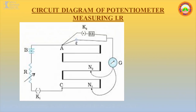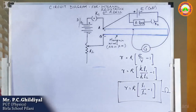In the circuit diagram for measuring internal resistance: the primary circuit contains a driver battery in series with a rheostat and key K1. In the secondary circuit, the cell whose internal resistance is to be found is connected with a resistance box in series with K2, a galvanometer, and a jockey. In step 1, K1 is closed and K2 is open; in step 2, both K1 and K2 are closed, but a known resistance is removed from the resistance box.